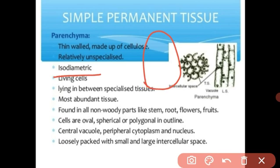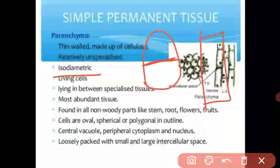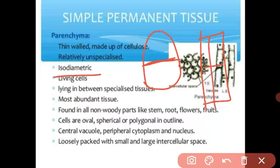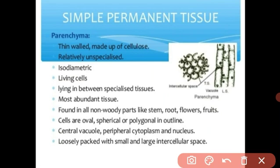Each parenchyma cell has an equal diameter — this is called isometric. All parenchyma tissue is living cell, not dead cell. It is a living tissue. The main function of parenchyma is to store food. It contains intercellular space. Parenchyma is the most abundant tissue, present in almost all organs of the plant body, including stem, root, flower, and fruits — in all the soft non-woody parts of the plant.